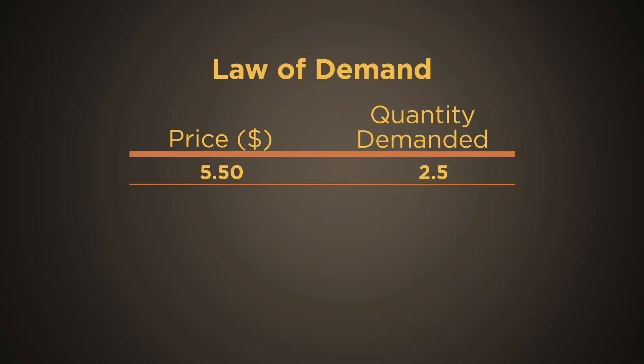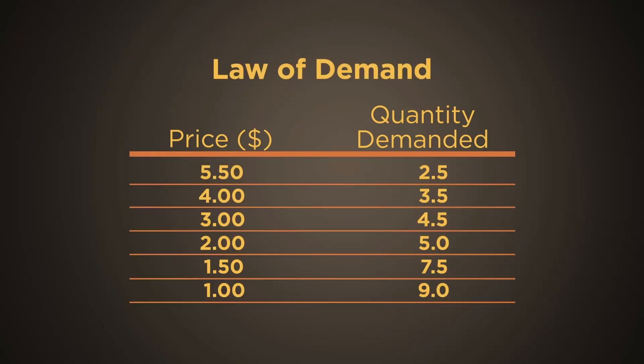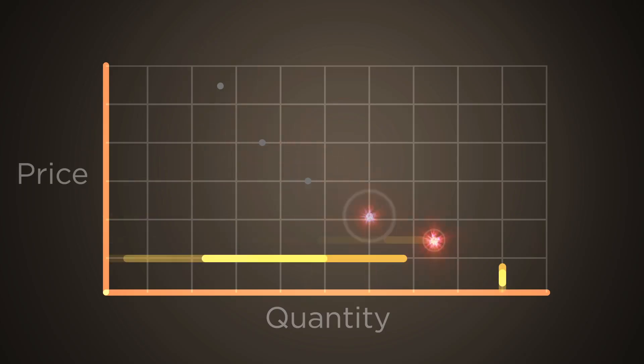The combination of the quantities people are willing and able to buy of a good or service at various prices constitutes a demand schedule. When the demand schedule is graphed, the demand curve is downward sloping.